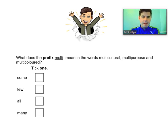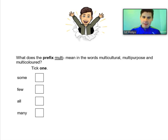If you think about multicultural, you might say a town is multicultural or a school is multicultural. You might say multi-purpose — for example, my key ring is multi-purpose. And you might say multicoloured — that coat is multicoloured. What does multi- mean when you put it in front of the root word? Some, few, all, or many? Pause the video and write down the prefix meaning you think is correct.